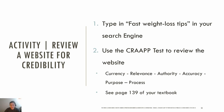The CRAAP test is a six-letter mnemonic device for evaluating the credibility and reliability of information found through various sources, including websites and social media channels. When using it, you're going to be looking at the currency, reliability, relevance, authority, accuracy, purpose, and process.